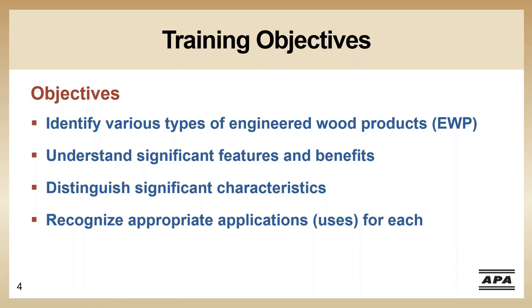Today our training objectives are on your screen. What we want to do today is talk about engineered wood products. We are going to identify the various types of engineered wood products that are commonly used in the field today. We're going to talk about some of the features and benefits of those products, go over some of their significant characteristics, and then one of the most important things is we want to recognize the appropriate application for each product — we want engineered wood products used in the right application so that at the end of the day, everybody's happy.